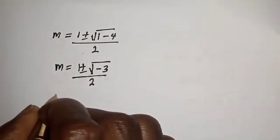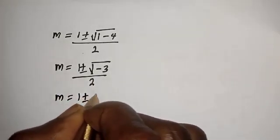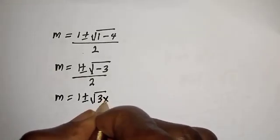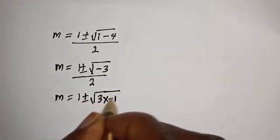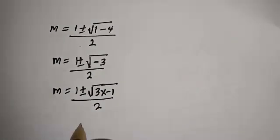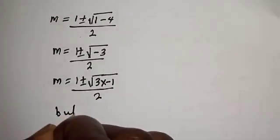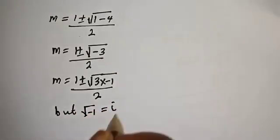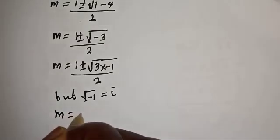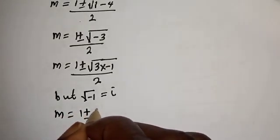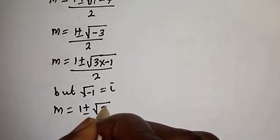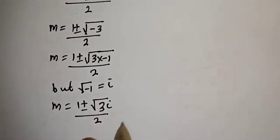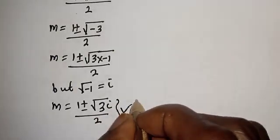Then m is equal to 1 plus or minus square root of 3 multiplied by minus 1, over 2. But the square root of minus 1 is equal to i, so m is equal to 1 plus or minus square root of 3 times i, over 2. The whole of this is a complex solution.